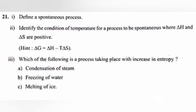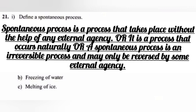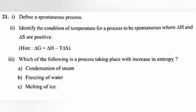Question 21: 1. Define a spontaneous process. Answer: Spontaneous process is a process that takes place without the help of any external agencies, or it is a process that occurs naturally, or a spontaneous process is an irreversible process and may only be reversed by some external agency.